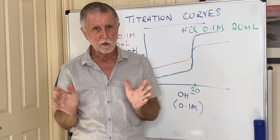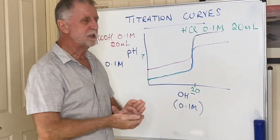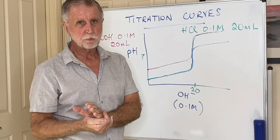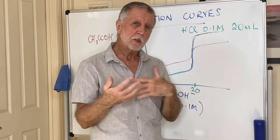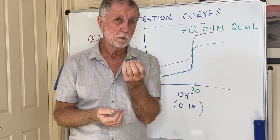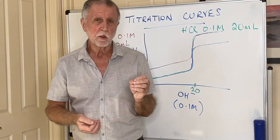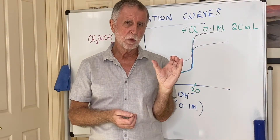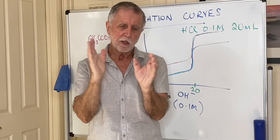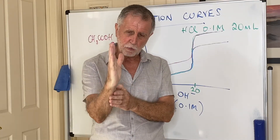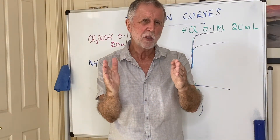On page 14 of the data book — which you need by your side at all times — there is a list of common indicators along with their pKa values. That tells you approximately what pH they change color. Also in that table is their range, because indicators don't just change color at a specific pH.